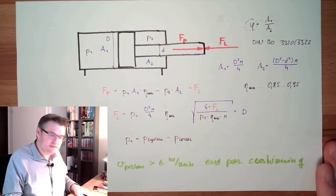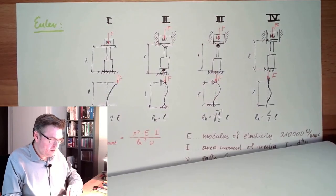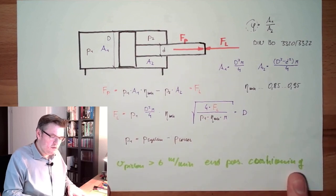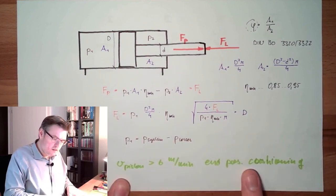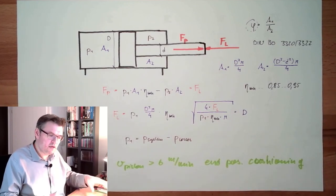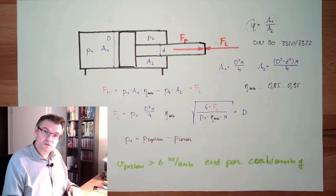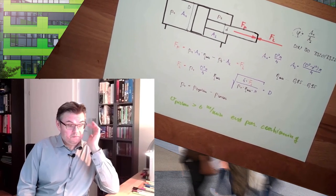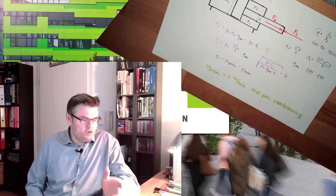This is how you select a cylinder: calculate the force, calculate the bending, determine the diameters, calculate the movement time, check if you need cushioning due to excessive velocity. Then you can already determine how many liters per second the pump must deliver for this cylinder. If you want to move more than one cylinder it will be double, triple, whatever. Next time we'll briefly talk about pump selection in a separate video, and after that we select the tank. Thank you very much for listening — goodbye, see you next time.